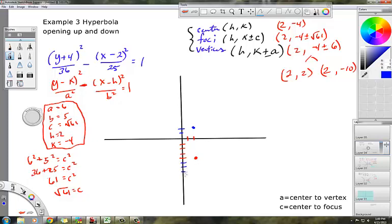So that's going to be down 6. So 5, 6, 7, 8, 9, 10, right there. Those are my vertices V. And remember that's where the hyperbola is going to hit.